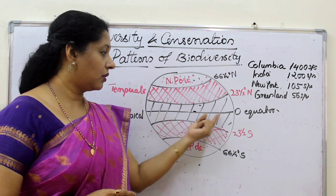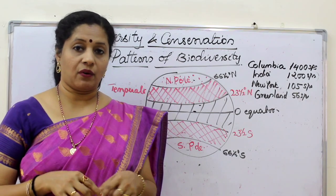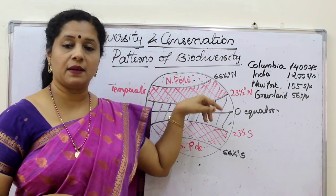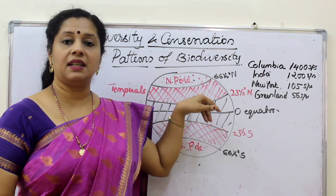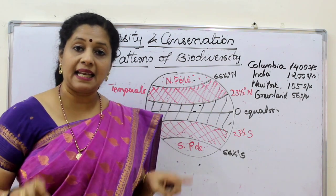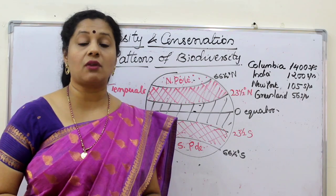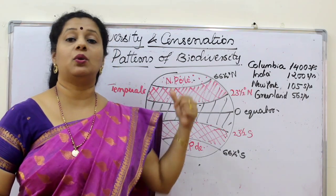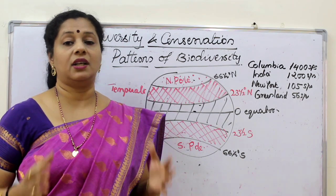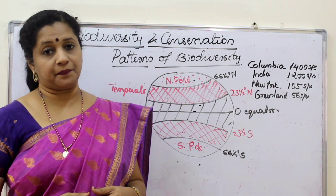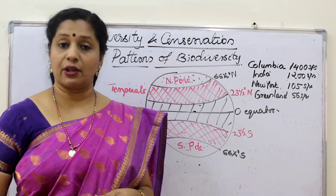If you see a forest in the equatorial or tropical region — for example, Ecuador — and compare the same area of forest in the Midwest USA, which is in the temperate region, the tropical region has 10 times more species of vascular plants compared to the temperate one. These all show that the diversity is very high near the equator, and this is called a latitudinal gradient — a gradation in the appearance of biodiversity.